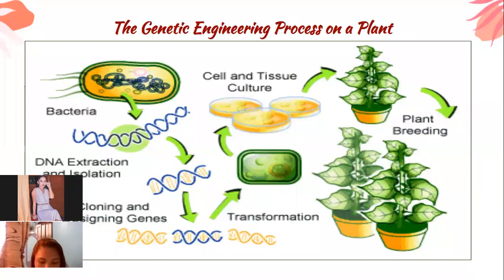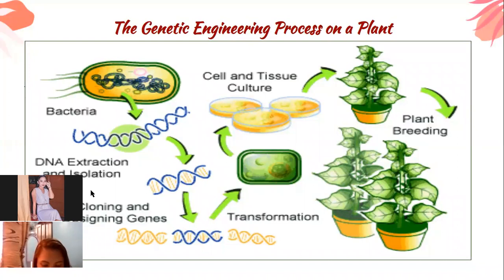Here is the genetic engineering process on a plant. First, bacteria are used, then DNA extraction follows. The bacteria are isolated, then after cloning and designing genes — to allow multiplication of the result — the next step is transformation, where it is converted into cell and tissue and implemented in the plant. This results in plant breeding.